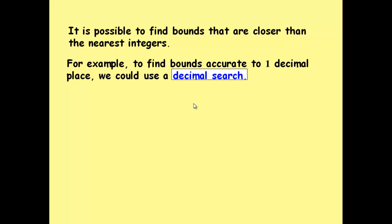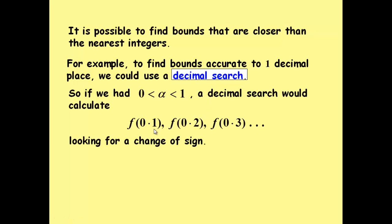If we wanted to find bounds accurate to one decimal place, we use what we call a decimal search. We could use f of 0.1, 0.2,